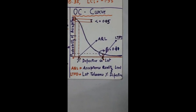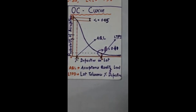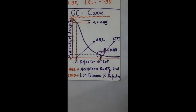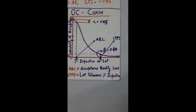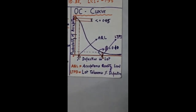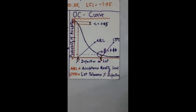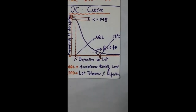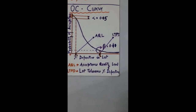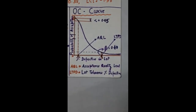We are going to discuss a very important topic which is called OC curve. OC stands for operating characteristic curve. As you can see, we have plotted probability of acceptance along the y axis, and along the x axis we have plotted percentage defective in the lot. So if the percentage defective in the lot is 0 — that means it is a very good quality lot without any defective — then the probability of acceptance is 1, because there is 100% chance the lot will get accepted. But if the percentage defective in the lot increases, the probability of acceptance will definitely decrease.